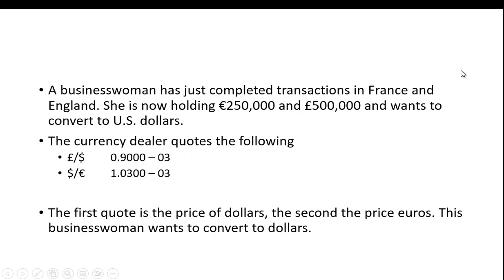Suppose we have a businesswoman who has just completed transactions in France and England. She's now holding 250,000 euros and 500,000 pounds, and she wants to convert this to US dollars. Here are the quotes: the number of pounds it takes to buy a dollar is 0.9000 — that's the bid — and the ask is 0.9003. The number of dollars it takes to buy a euro is $1.03 for the bid and $1.0303 for the ask.